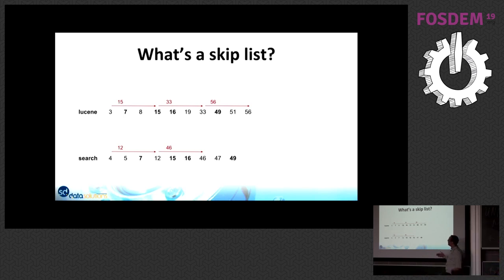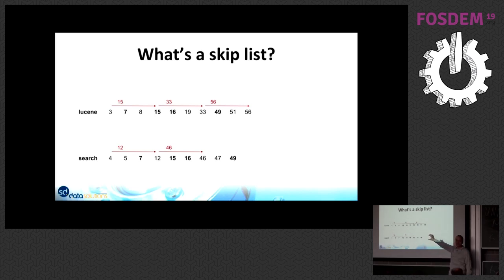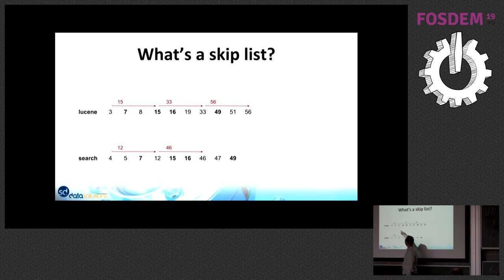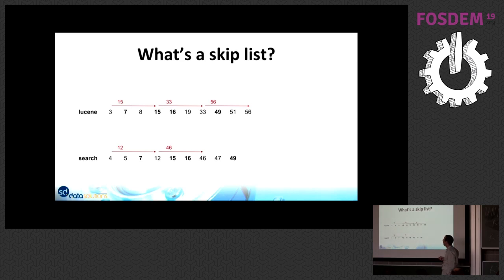So what is a skip list? In a standard Lucene index, if you query for two words — say 'lucene' and 'search' — the list contains the document numbers which have that term. For an OR query you simply collect all those document numbers and score them. For an AND query you make use of the skip list: you iterate through the posting list of the first term, find document number 7, then skip the other posting list forward to any document at or after 7.